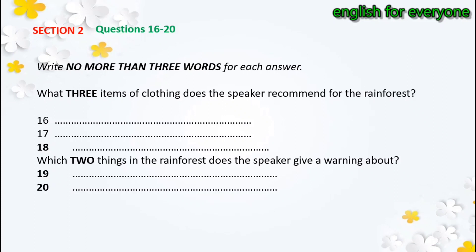You now have some time to look at questions 16 to 20. Now listen to the rest of the talk and answer questions 16 to 20. You've chosen to visit the rainforest in March, which is just at the end of the wet season, so you'll soon notice how well the waterfalls are running and also how damp the ground is. Things can tend to get a bit slippery too, so if you didn't bring any walking boots, I'd advise you to hire some from the office. You'll also be much better off in long trousers rather than shorts, because they will give your legs more protection. And socks are a good idea, too.